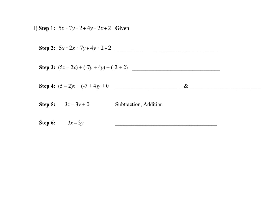If you take a look at the very first one, the expression that's given is this right here. If you look at step one to step two, it's the same problem but we did something different — I changed the order. I took the 5x and the negative 2x and put them together, then the y's together, and then the negative 2 and the positive 2 together.